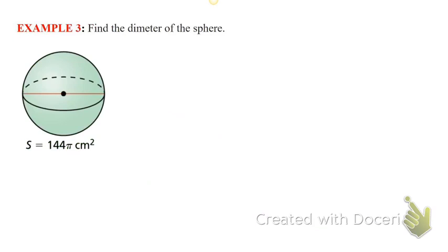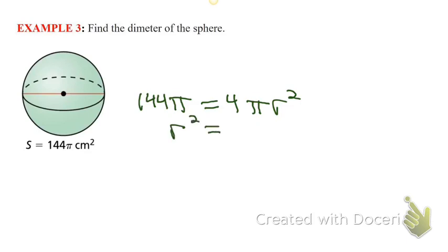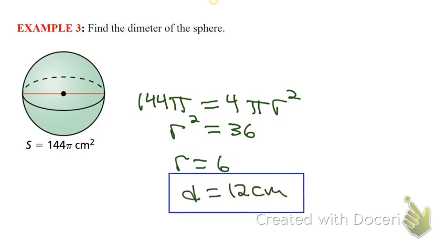The diameter of the sphere: we've got the total surface area of the sphere, so we set that equal to 4 pi r squared. We're going to divide out the pi and divide out the 4. So r squared is 36, which means r is 6. If r is 6, the diameter is 12 centimeters.